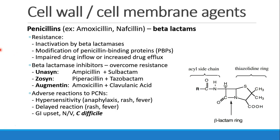When you administer beta-lactam drugs, bacteria have come up with ways to be resistant. They can inactivate them using an enzyme called beta-lactamase. They can modify proteins called penicillin-binding proteins that are on the surface of the bacteria so that the penicillin can no longer bind. They can change the way the drug is taken into the cell or increase pumping the drug back out of the cell once it invades.